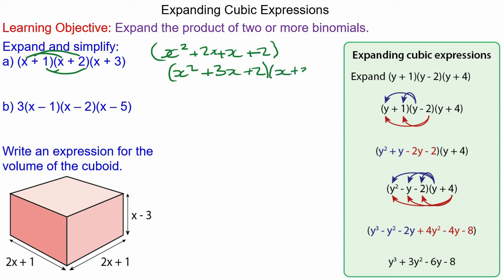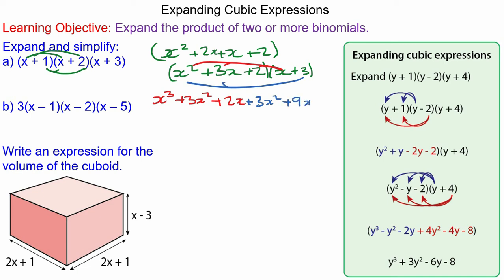We're expanding the quadratic by the third bracket (x plus 3), so we have x times x squared which is x cubed, times 3x which is 3x squared, and times 2 to make 2x. Then the 3 term: 3 times x squared is 3x squared, times 3x to make 9x, and times 2 to make 6. Collecting the like terms we have x cubed plus 6x squared plus 11x plus 6.